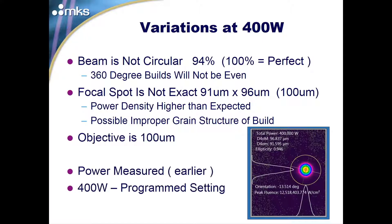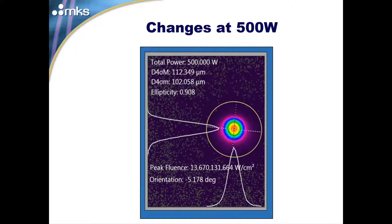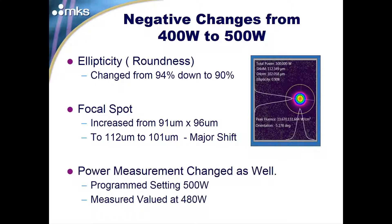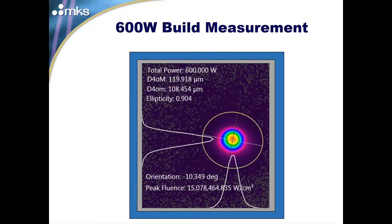At 500 watts on the same laser, the beam changed: beam size is now 112 by 102 microns, and the ellipsicity has gotten more oval — down to 90% from 94%. So if this process calls for both 400 and 500-watt applications, we'll have a significantly different beam performing the 500-watt portion. The power programmed at 500 watts actually measured 480 watts. At 600 watts, the beam is now 119 by 108 microns with ellipsicity stabilized at 90%, and power dropped to 580 watts — a 3.3% differential.